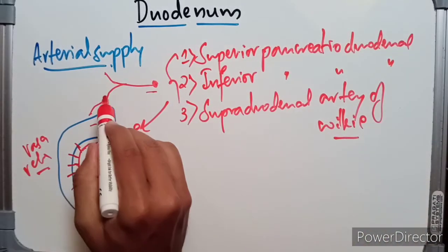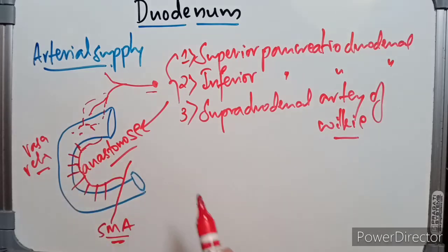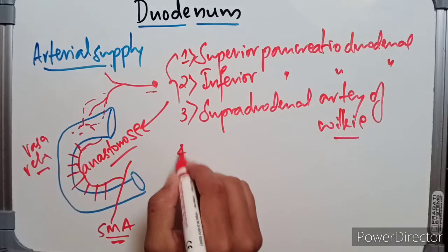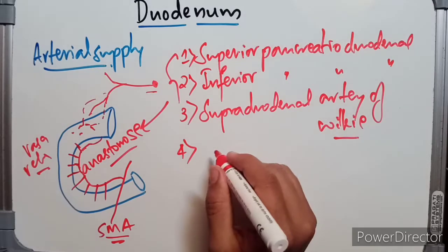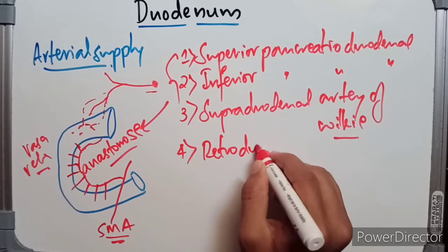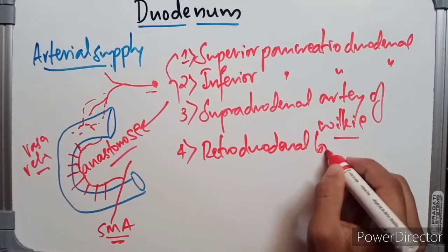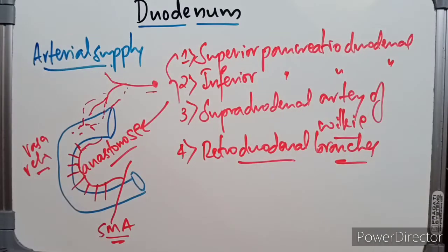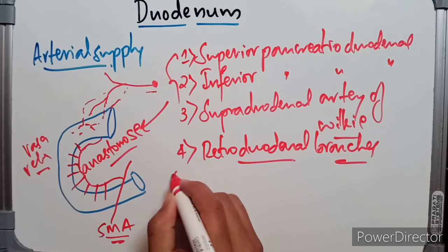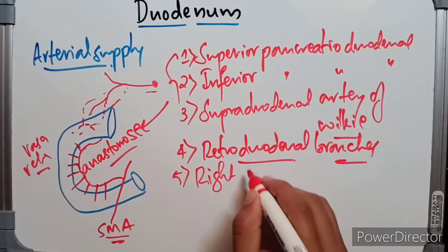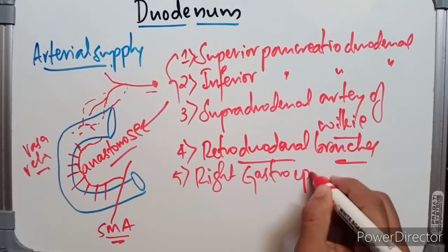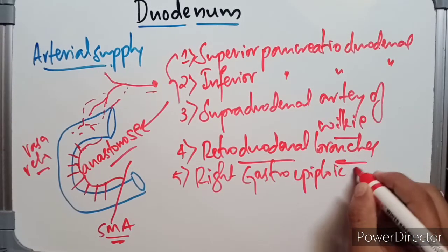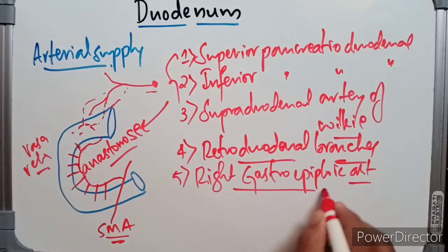The supra-duodenal artery of Wilkie is a branch of the gastroduodenal artery, which supplies the anterior surface of the first part of the duodenum. The fourth arterial supply comes from the retro-duodenal branches of the common hepatic artery, which also supply the duodenum. We also have branches from the right gastro-epiploic artery, which supplies the greater curvature of the stomach; small branches from it also supply the lower part of the duodenum.